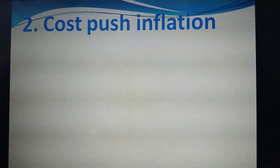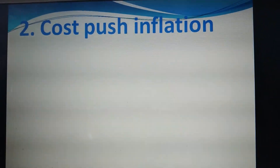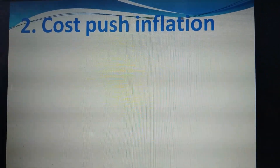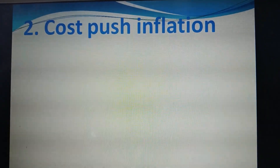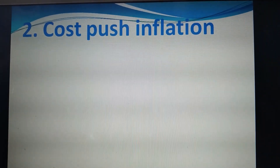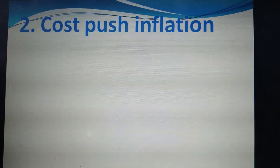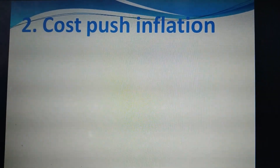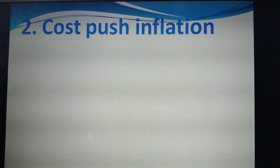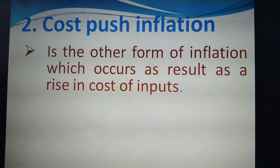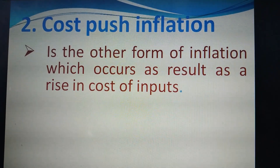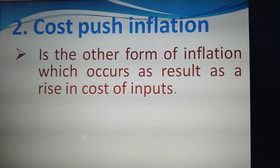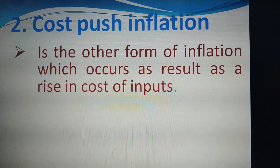Cost-push inflation may be caused during production when producers face a high cost of production. When raw materials or inputs for a product are declining or scarce, the cost of that product increases. Cost-push inflation occurs as a result of increasing costs of inputs or raw materials for a production facility, and the rising cost of production pushes this type of inflation to occur.